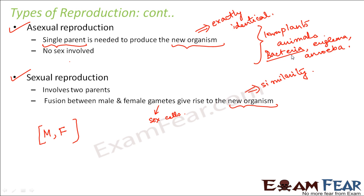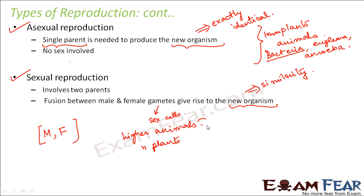For example, when bacteria reproduce asexually they produce hundreds and hundreds of new bacteria, but when human beings reproduce it gives birth to one child, or sometimes twins. So the multiplication rate in sexual reproduction is quite low compared to asexual reproduction. Sexual reproduction is seen in higher animals including human beings and other mammals, and also in higher plants — all the flowering plants reproduce sexually, involving fusion between the male and female gametes to give rise to the new organism.